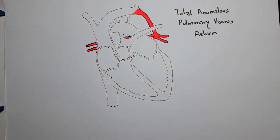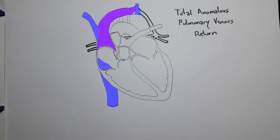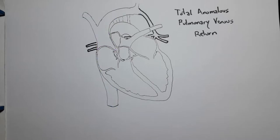Instead, all of the oxygenated blood from the lungs will just be thrown into the right heart, along with all the deoxygenated blood coming from the body. To which you may ask: where exactly in the right heart? Do you mean the right atrium? Well, there are many possibilities — some are more likely than others.